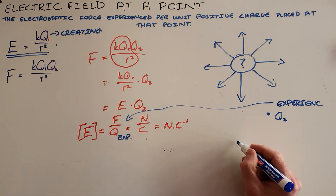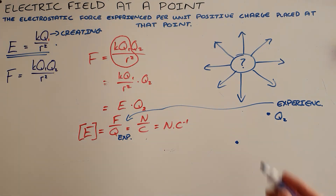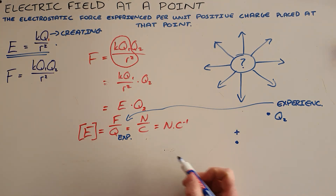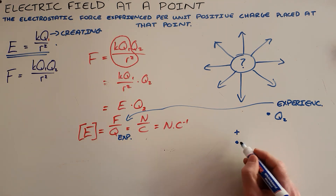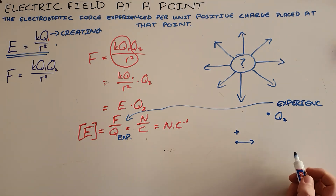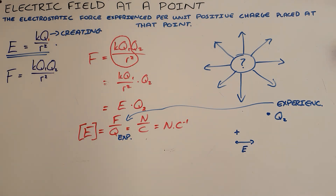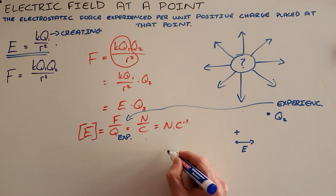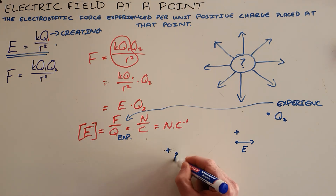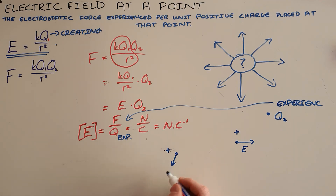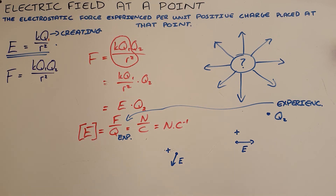The direction of an electric field is the direction in which a positive charge would move when placed in that field. So when we are told that a positive charge placed at a point experiences a force to the right, the electric field is directed towards the right. When a positive charge experiences a force at some strange angle, then that angle is the direction of that electric field.